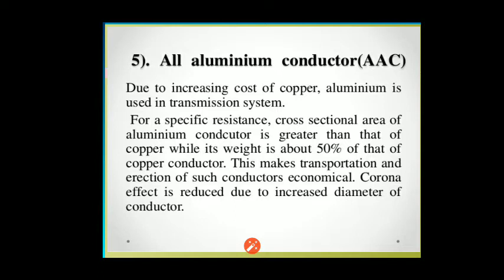Fifth, the all-aluminium conductor. Due to increases in the cost of copper, aluminium is used in transmission lines. For a specific resistance, the cross-sectional area of the aluminium conductor is greater than that of copper, while its weight is about 50 percent of that of the copper conductor. This makes transportation and erection economical, and the corona effect is also reduced due to the larger diameter.